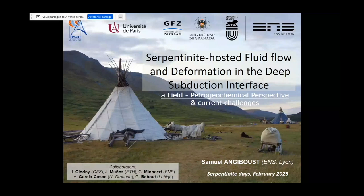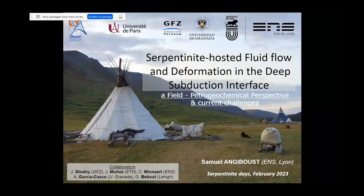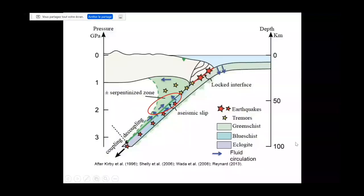Thank you for giving me this chance to present these thoughts and preliminary results about how fluids are moving in serpentinite environments. There is a lot of serpentinite in the deep subduction interface, deeper than the region where the seismogenic zone is located. This is mostly related to fluid transfer across the interface and partial serpentinization of the mantle wedge, as a consequence of fluid release due to prograde dehydration reactions.